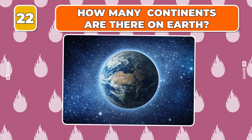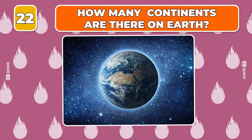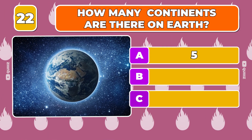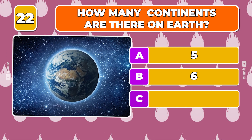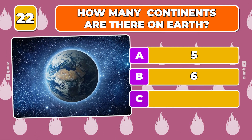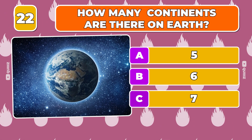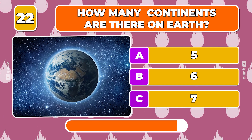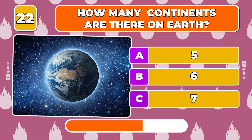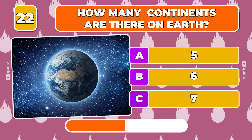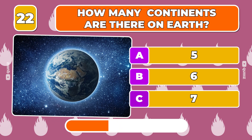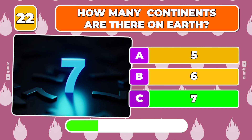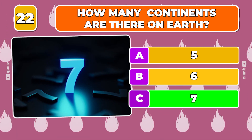Question 22. How many continents are there on Earth? Five, Six, Seven. Correct, the answer is seven.